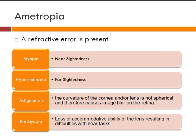Then comes astigmatism. It is a refractive error in which the curvature of the cornea or lens is not spherical, causing a blurred image on the retina due to formation of two focal points. Normally we assume the image forms a single focal point, but in astigmatism the image is formed on two points. Then comes presbyopia — presbyopia is loss of accommodative ability of the lens resulting in difficulty with near tasks. The accommodative power starts decreasing slowly and at the age of 40 years a person requires aid for near work.